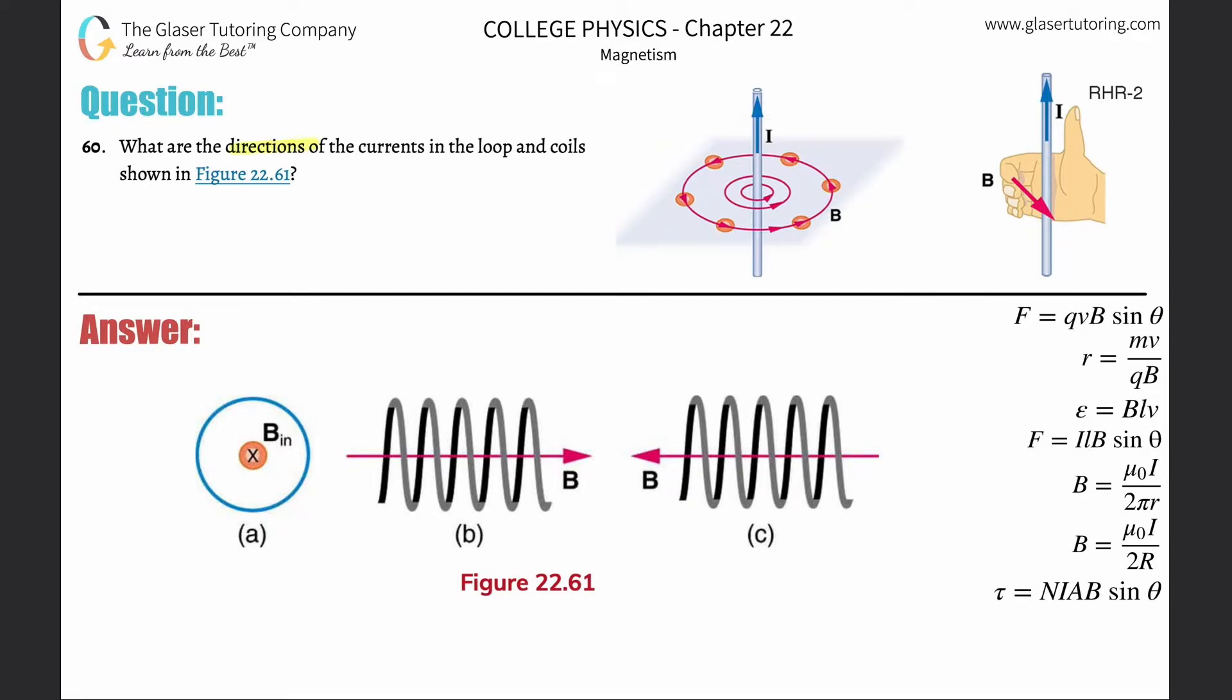Number 60: What are the directions of the currents in the loop and coils shown in Figure 22.61? Please review number 59 also. I talked about that concept, just the reverse—meaning talking about currents that produce magnetic fields.